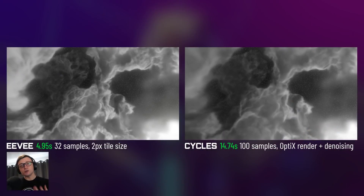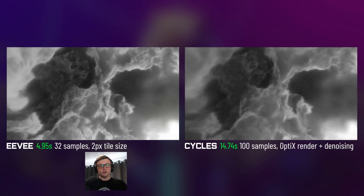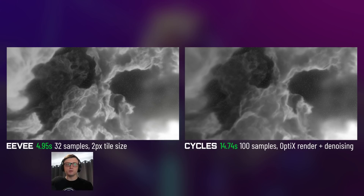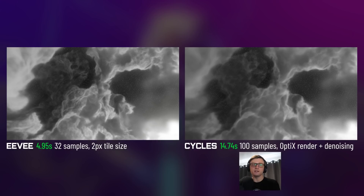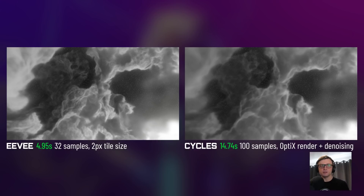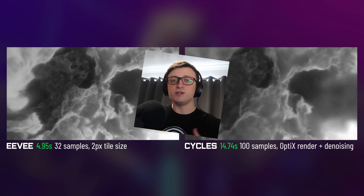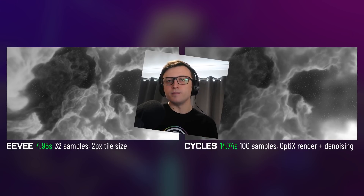So what about render times? The first image uses Eevee, which rendered the frame in 4.95 seconds — pretty quickly. The tile size for the volume was 2 pixels, the lowest you can go, and render samples were set to 32. I really wanted to get Cycles X below 10 seconds but didn't quite make it. The second image used Cycles X with Optix, rendering at 14.74 seconds at 100 samples at 1920x1080, with Optix denoising applied afterwards. The difference between 4.95 and 14 seconds is not particularly huge when we're making a direct comparison between a rasterisation and a path-traced engine — I think that's actually pretty damn good.